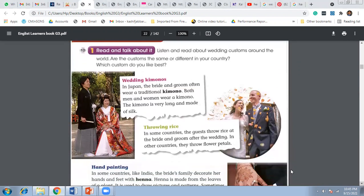We learned about wedding kimonos in Japan. The bride and groom often wear a traditional kimono. This is the name of the dress, as you can see in the picture. Both men and women wear a kimono. The kimono is very long and made of silk.